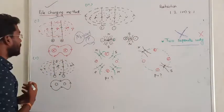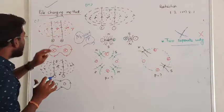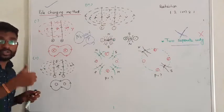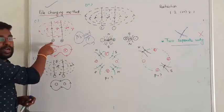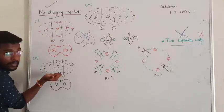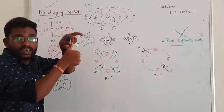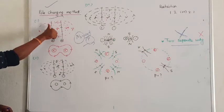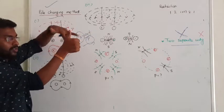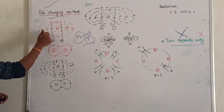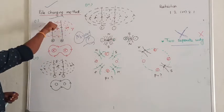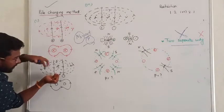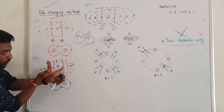Let us discuss some basics required here. Two conductors are connected carrying current in the same direction. We need to use the right-hand thumb rule. The thumb indicates the direction of current, and the rest of the fingers indicate the direction of flux. If current is going inside, the flux rotates in the clockwise direction.